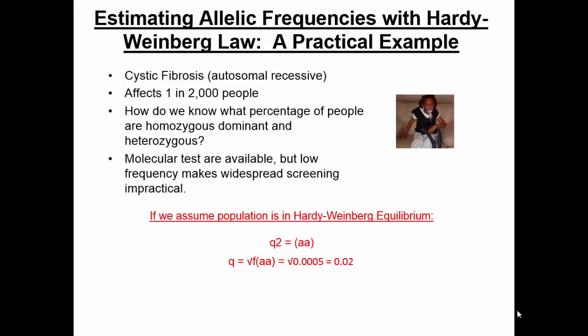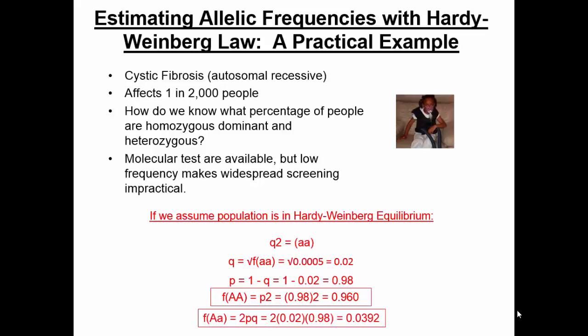Once we have Q, we can figure out P. P equals 1 minus Q, so 1 minus 0.02 equals 0.98. The frequency of the homozygous dominant individuals is P squared: 0.98 squared is 0.96. We can figure out the heterozygote frequency using 2PQ — doing the math gives us 0.0392. Whenever you do these problems, the frequency of the heterozygote is the key.